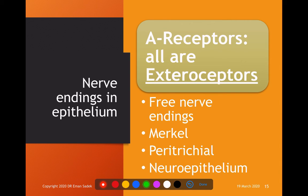Starting with receptors in the epithelium — they are all exteroceptors, not interoceptors. There are four types: number one, the free nerve endings; number two, Merkel disc; number three, peritrichial plexus of nerves; and number four, neuroepithelium.